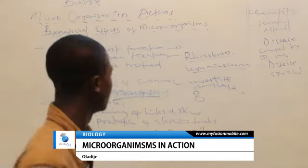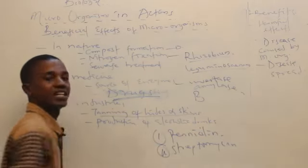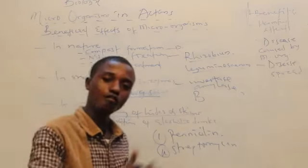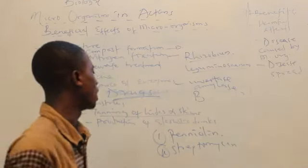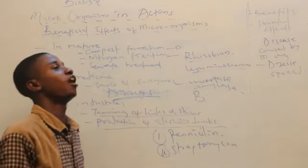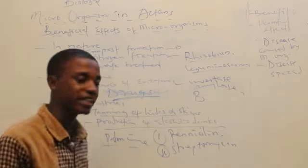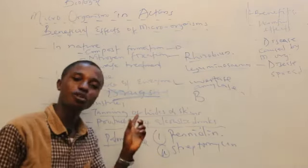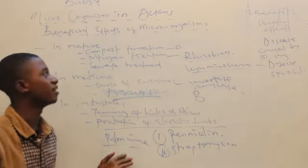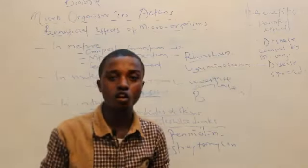Coming to industries, microorganisms are of immense importance. First, there is tanning of hides and skins — the conversion of animal skins into usable materials, which microorganisms help to accomplish. Also, in the production of alcohol, one notable traditional drink present at most occasions is palm wine. Palm wine is produced through the action of yeast, which carries out anaerobic respiration. These are the beneficial effects of microorganisms.